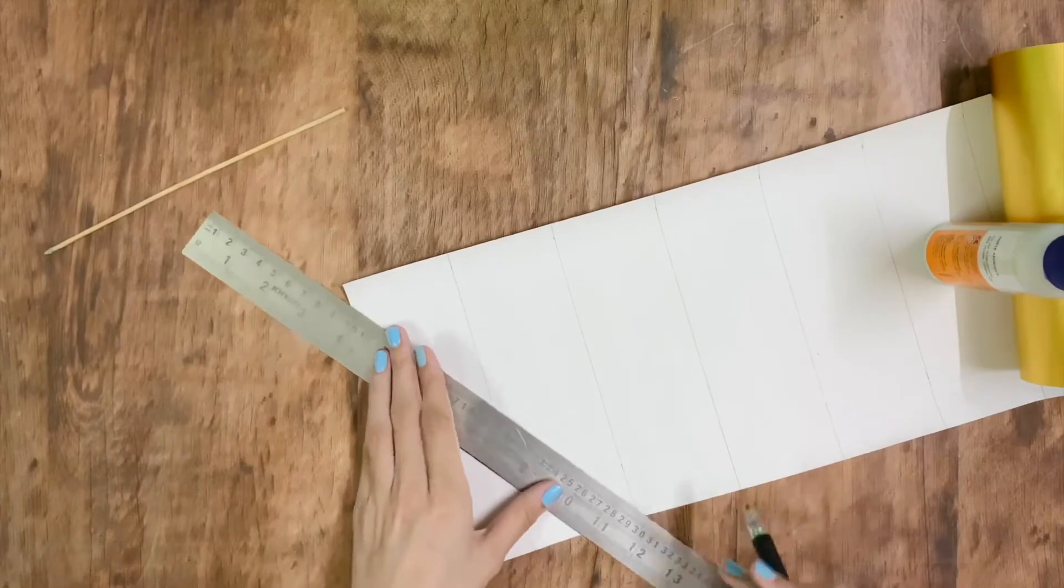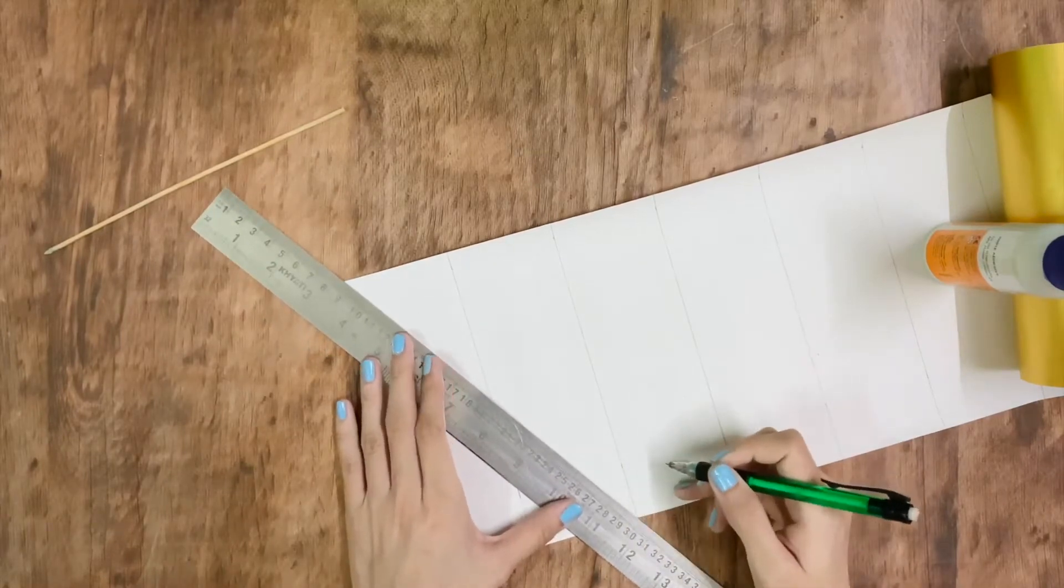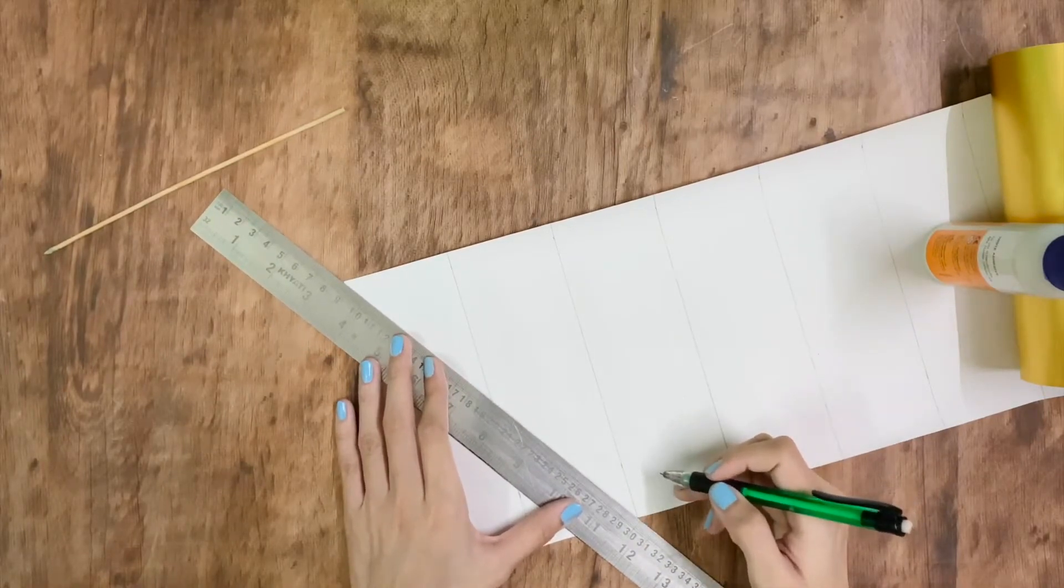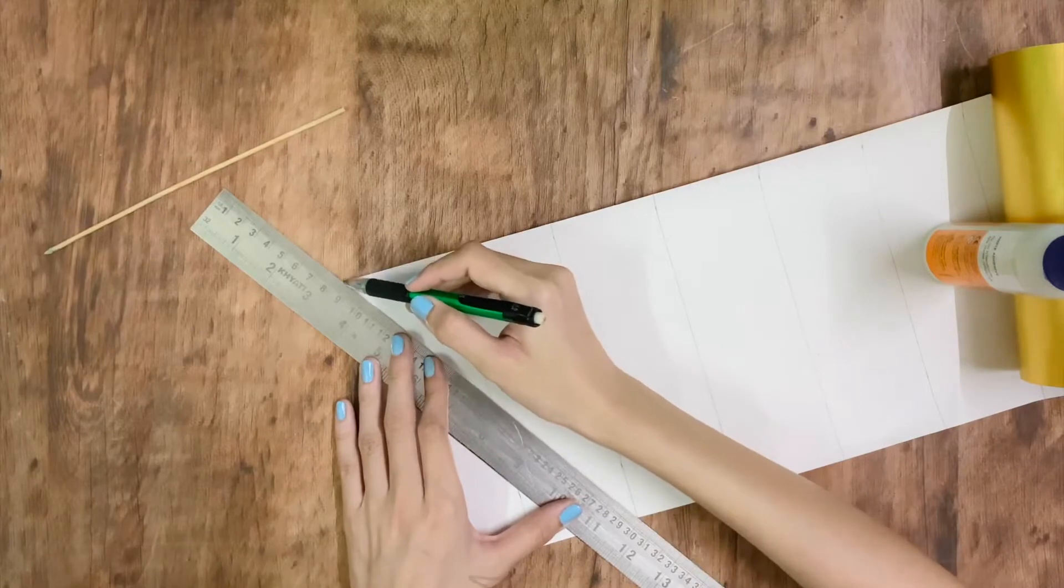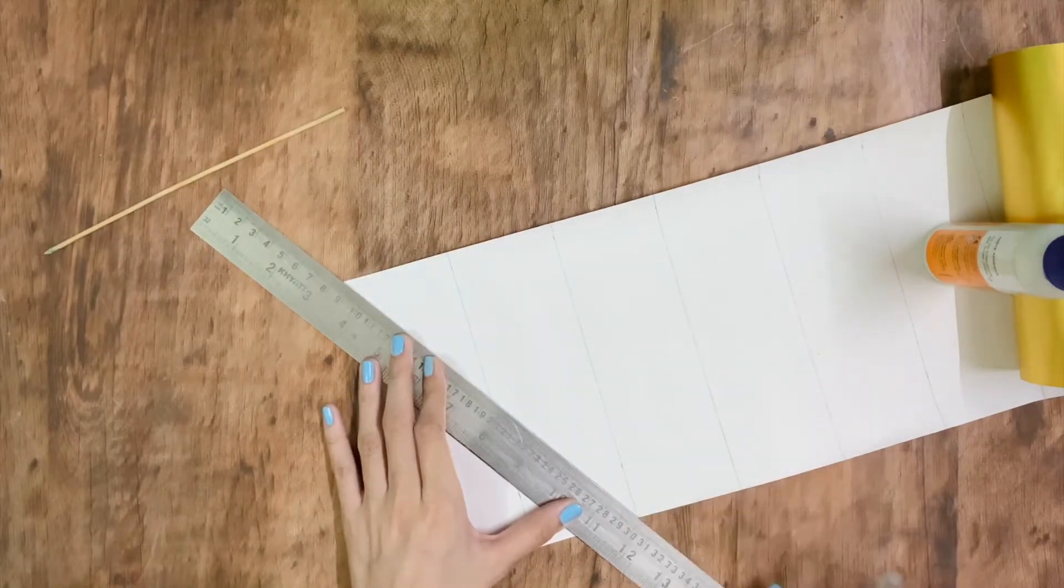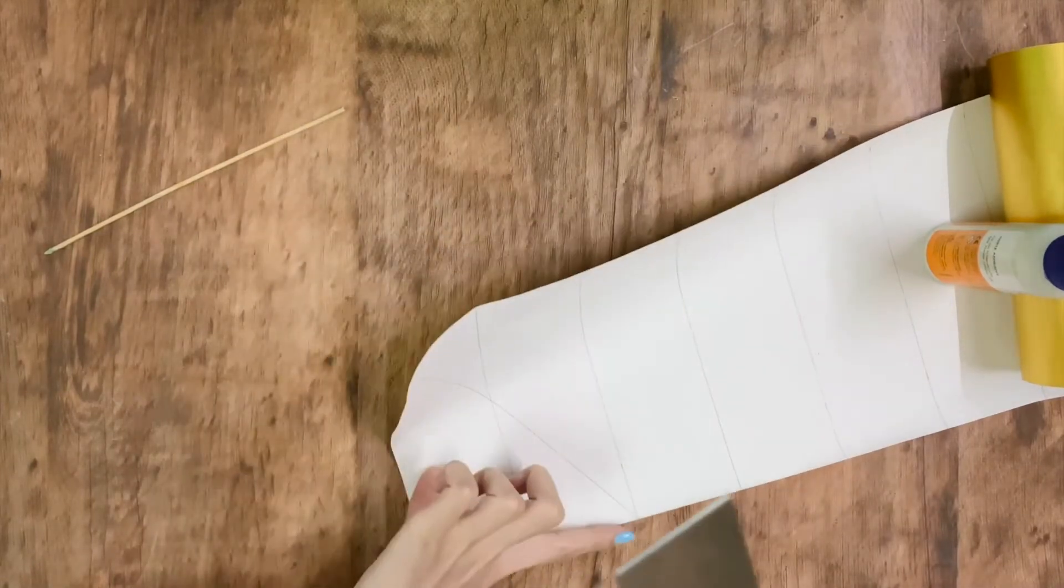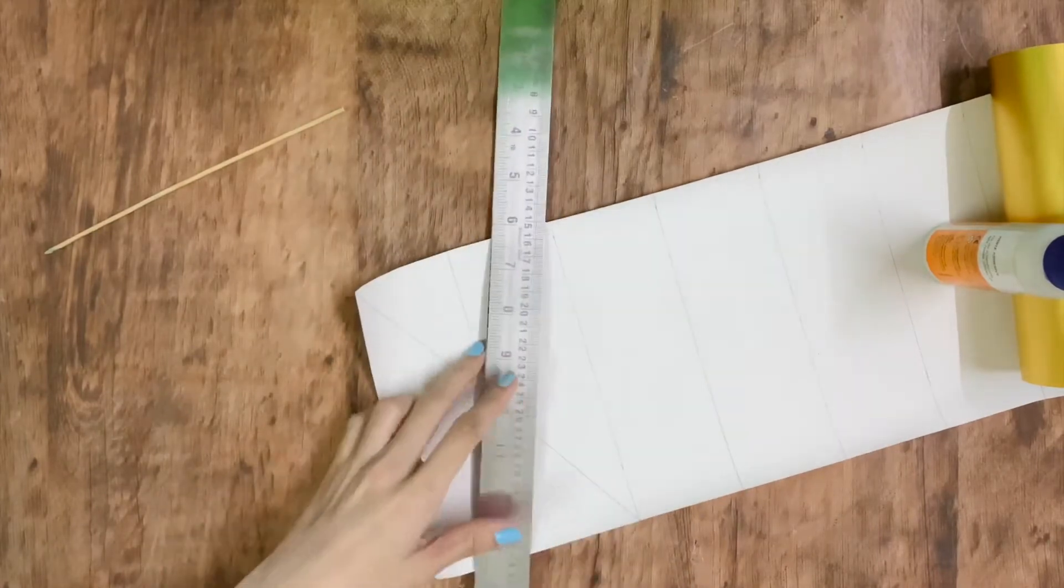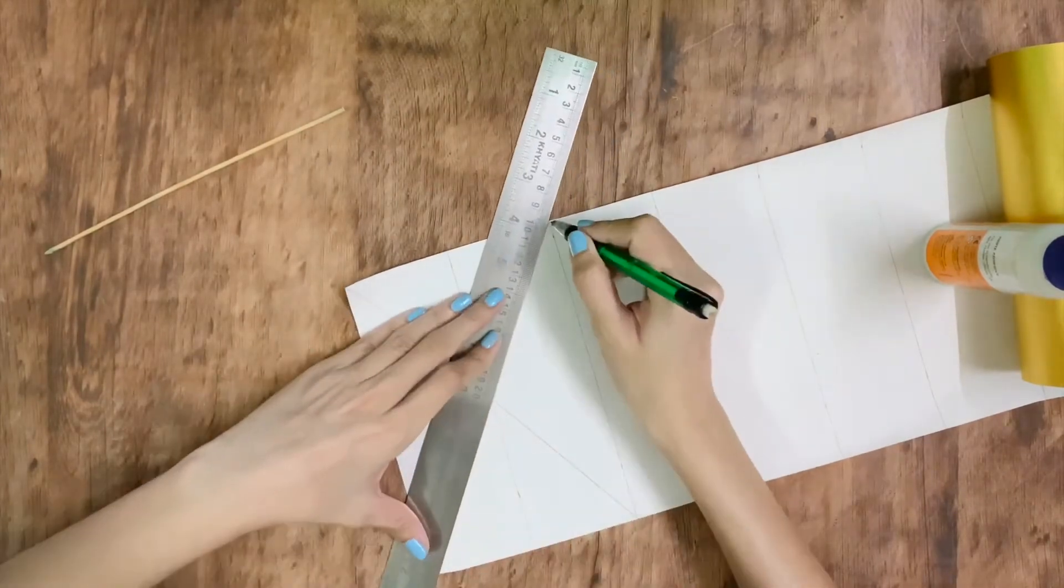Once your vertical lines are done, from the top corner of the first line to the bottom corner of the third line make a line. Leave the second line as it is. In the same way, from the top corner of the third line and the bottom corner of the first line make a line.